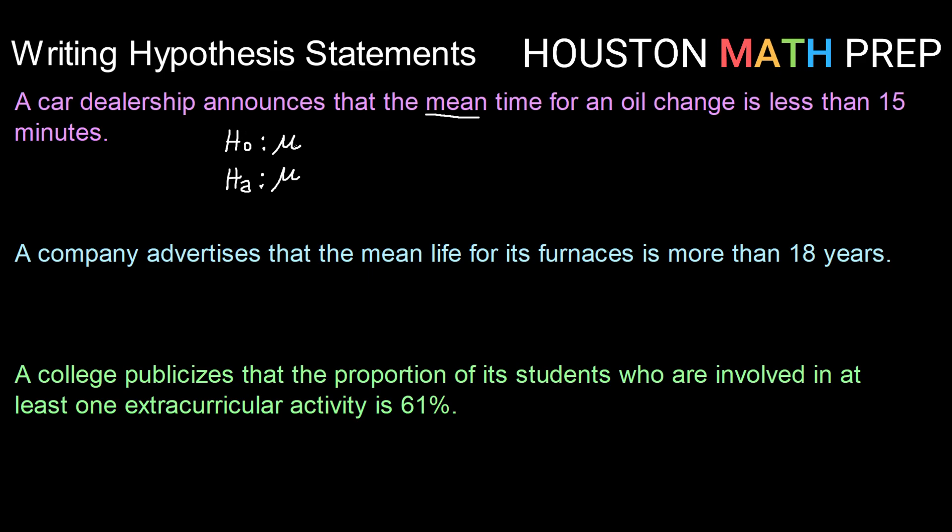My null hypothesis always has to be a statement of equality. So we're going to say mu is equal to 15. Then the claim here is that the mean time is less than 15 minutes. So that's going to go in our alternative hypothesis. So we're going to say we're testing the claim that mu is less than 15.